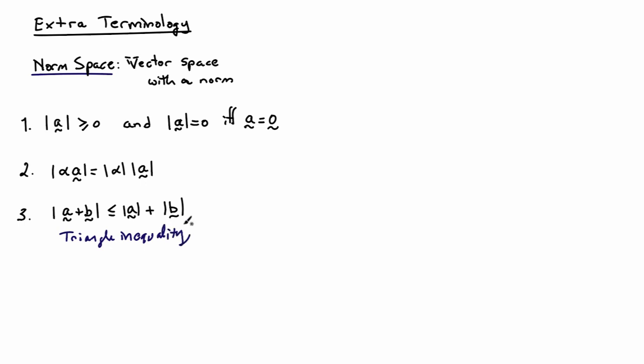You also have to have something known as the triangle inequality: the norm of a + b is less than or equal to the norm of a plus the norm of b. It's easy to see this is true in the usual setting: if I add a plus b it gives me a vector c, and from the diagram it's clear that the length of c is less than or equal to the length of a plus the length of b. That's a standard property of a norm.